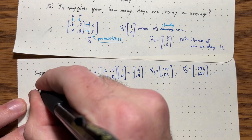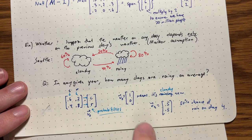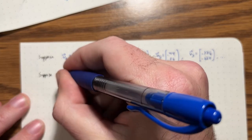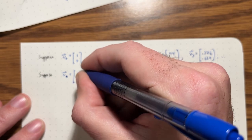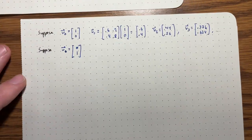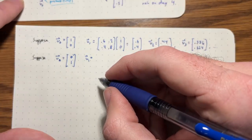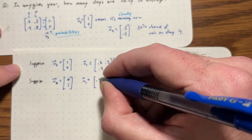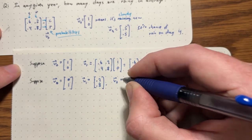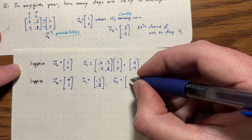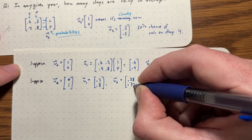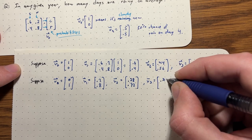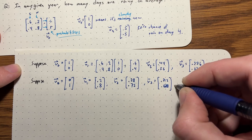Let's look at the opposite extreme. If V0 is [0, 1] - it's definitely raining now - what's V1? That's just the second column: [0.2, 0.8]. V2 is [0.28, 0.72]. V3 turns out to be [0.312, 0.688], and we can continue.